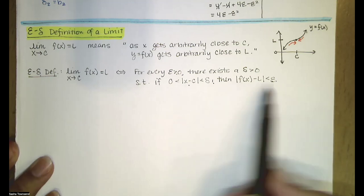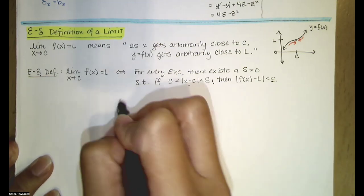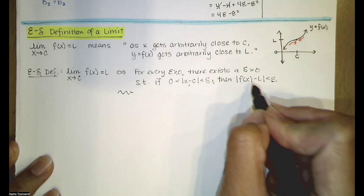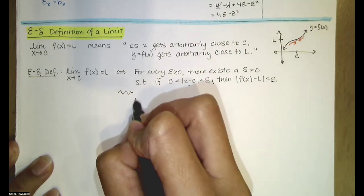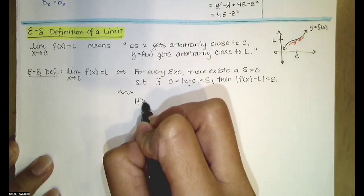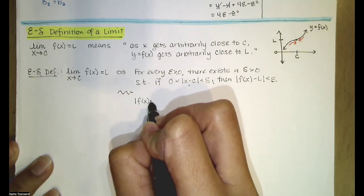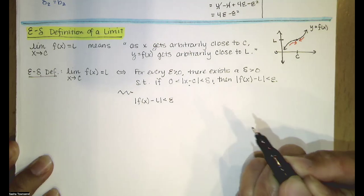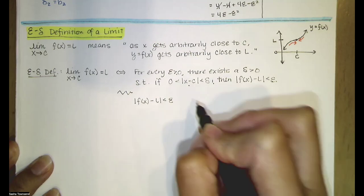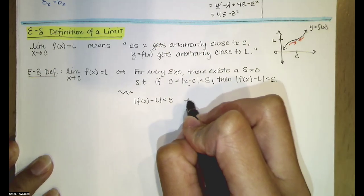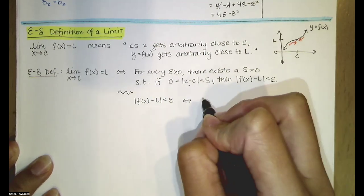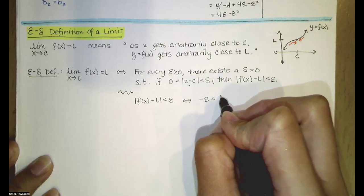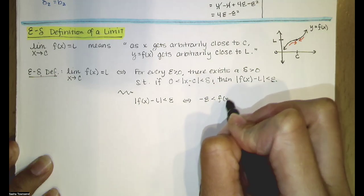Let's look at each of these pieces separately. The absolute value of f(x) minus L being less than epsilon means that f(x) minus L is between negative epsilon and epsilon.